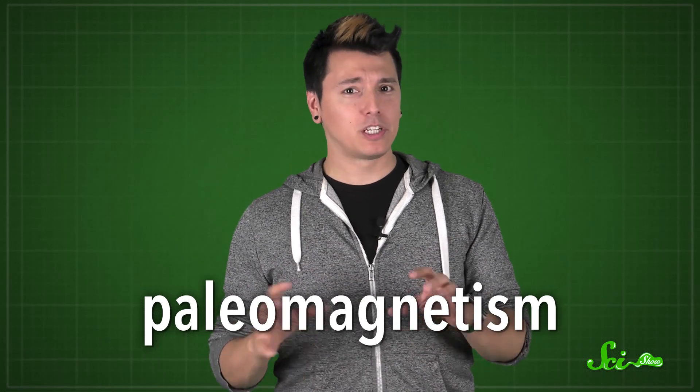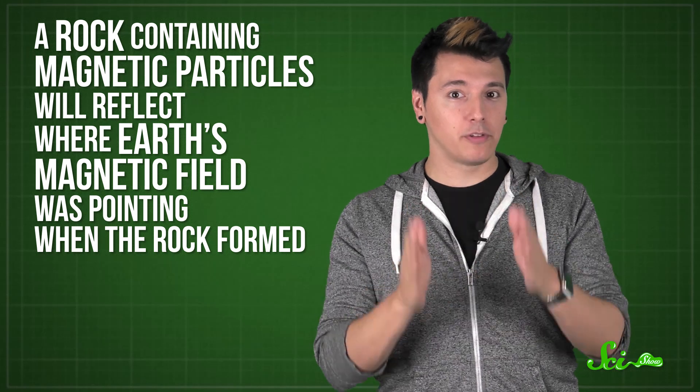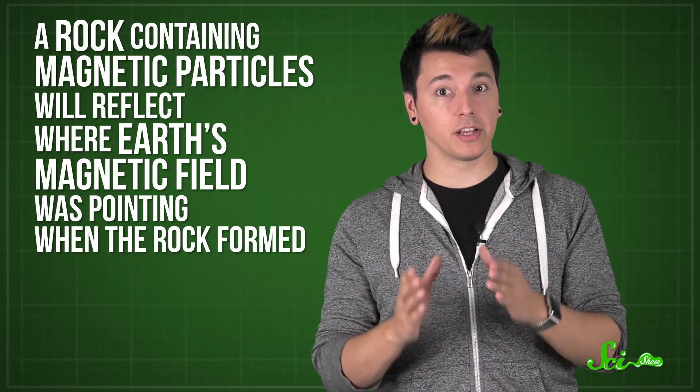The main tool geologists use for this is called paleomagnetism, which is based on the fact that Earth's magnetic field regularly reverses itself. When a rock forms, any magnetic bits in it will line up with the Earth's magnetic field at the time. That means a rock containing magnetic particles will reflect where Earth's magnetic field was pointing when the rock formed. And since the magnetic field reverses on the order of thousands of years, that provides a ton of data when we're looking at things that happened over billions of years. Using math, we can pinpoint pretty accurately where on Earth the rock was.